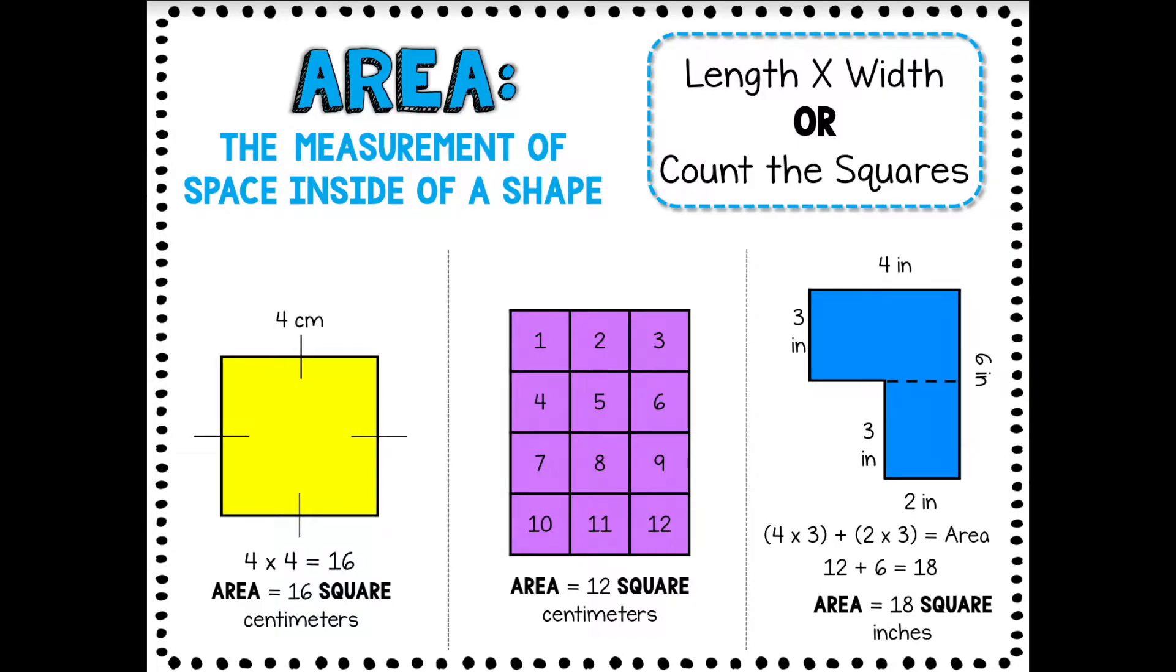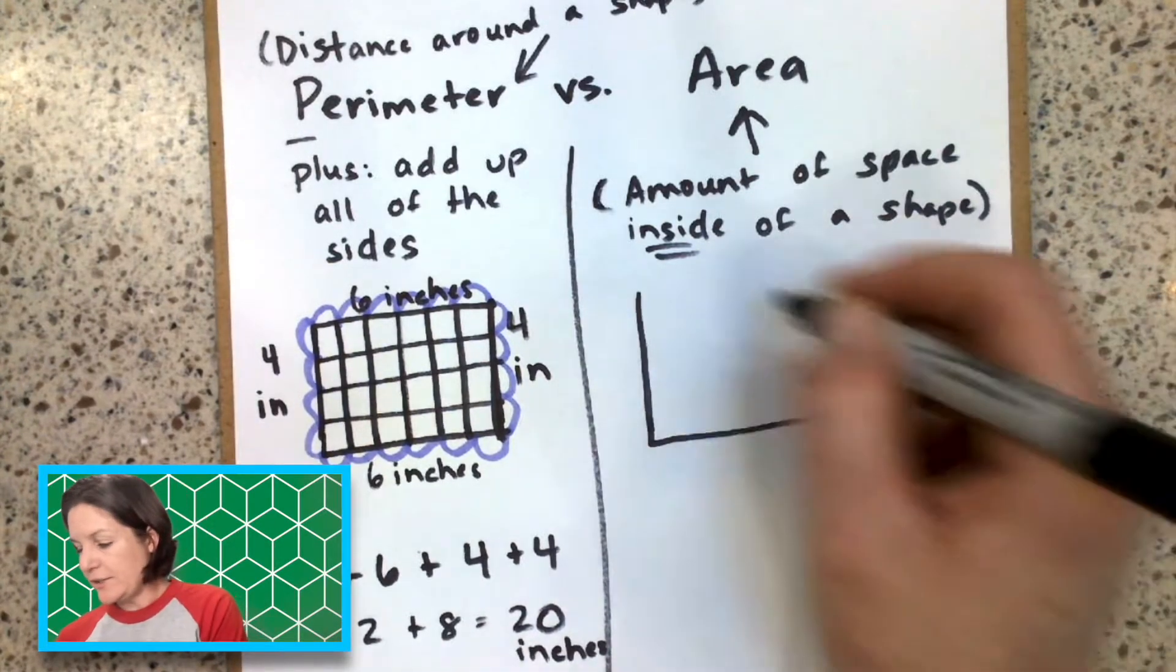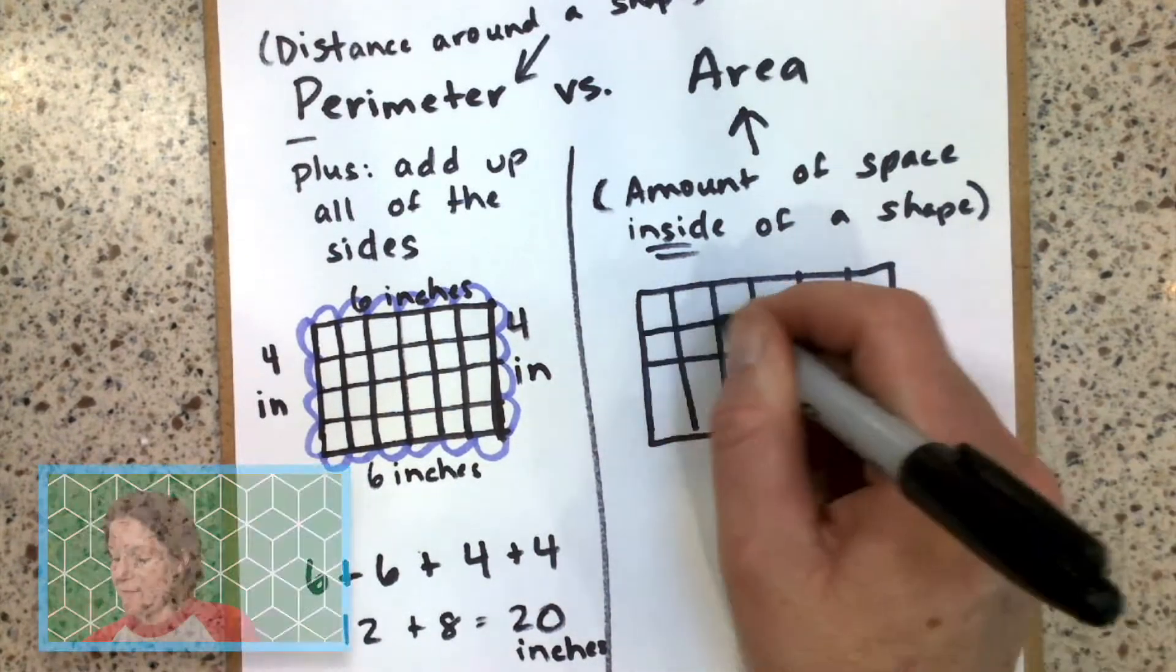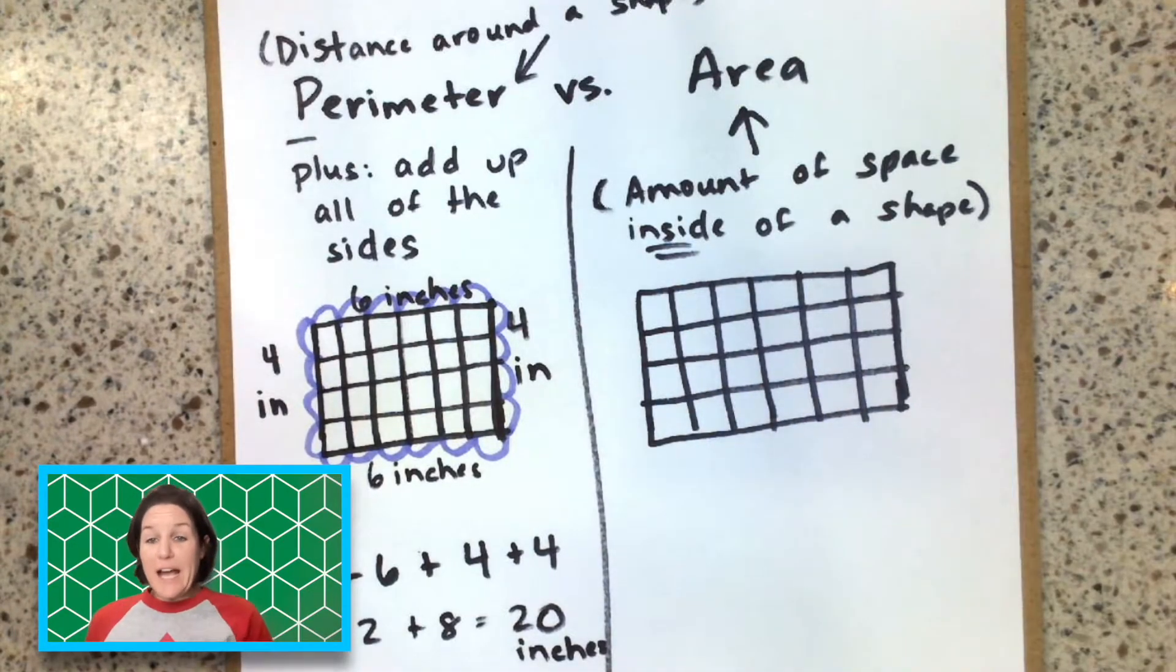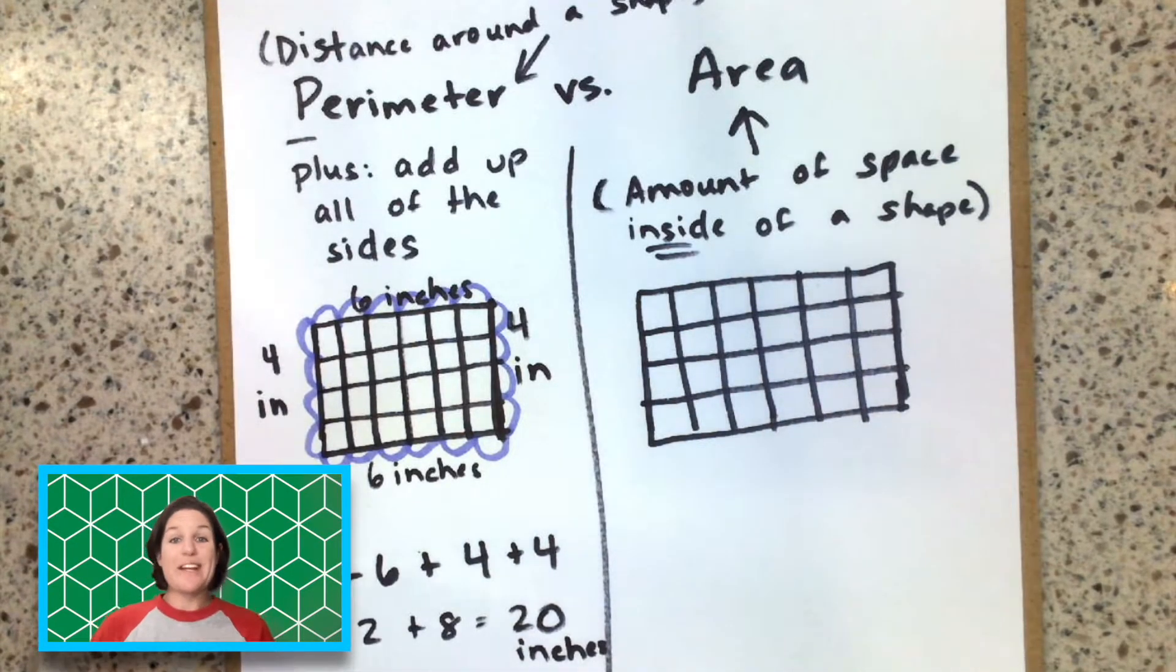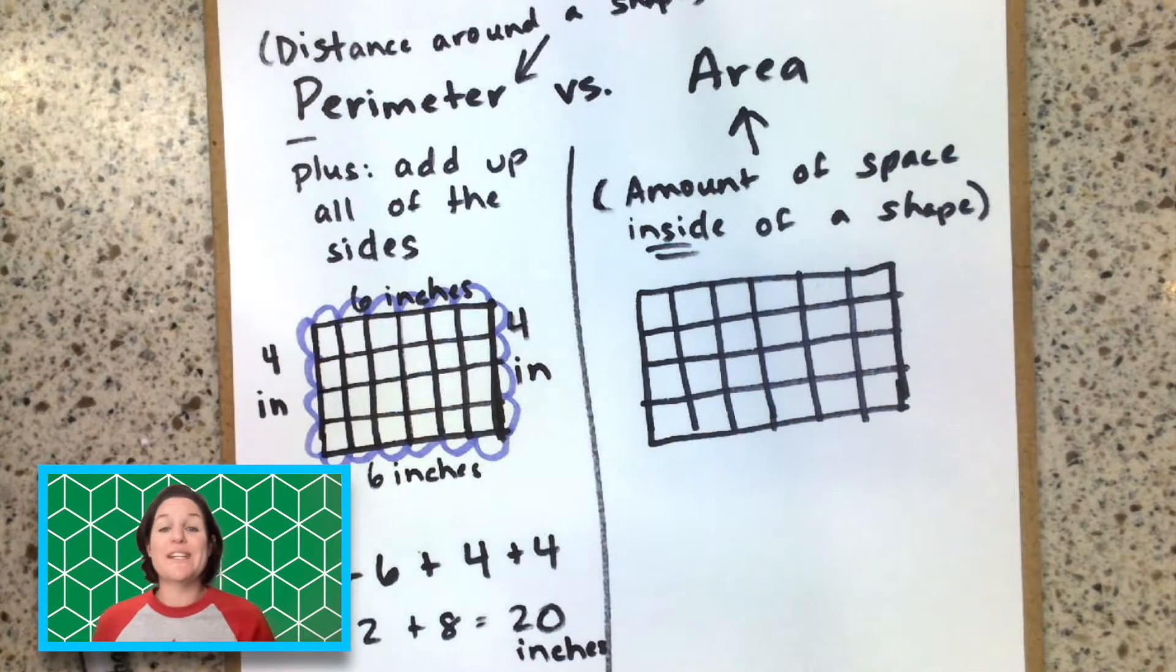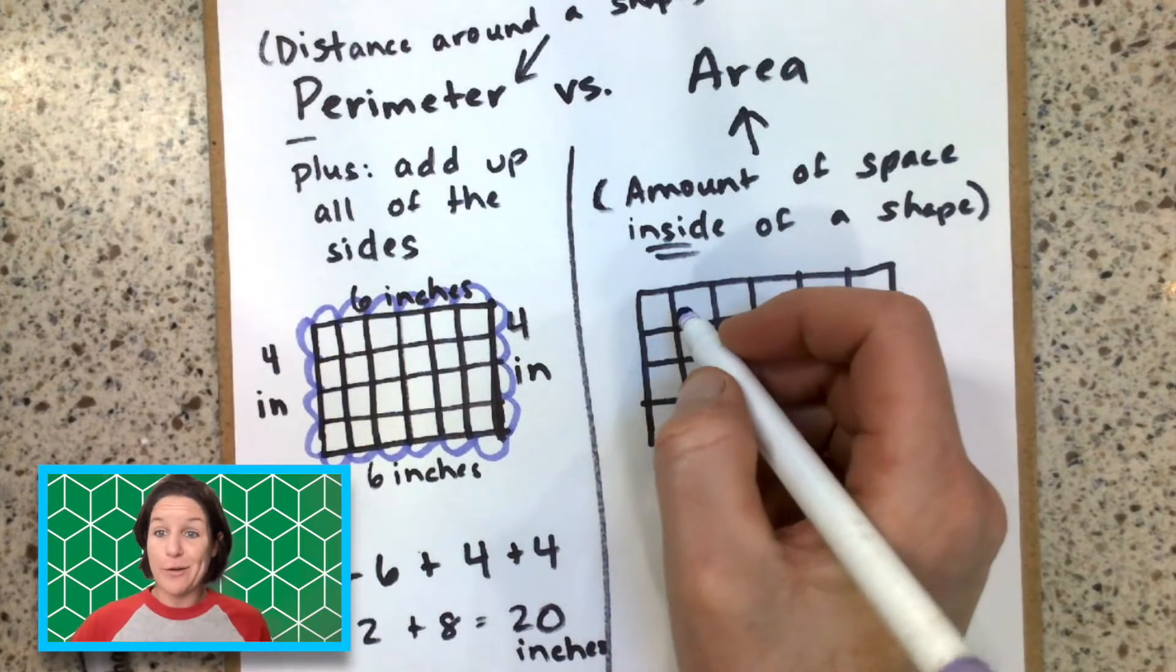So like think of like an area rug, it would be the amount of space that that rug takes up. So if we're taking that same rectangle, right, and let's go ahead and put that grid on it too. Let's say that it was drawn just like this with square units. This is usually how we introduce area to students. Okay, so now what we would be doing because it's the amount inside of the shape. Well, here's the shape and we're counting up the square units inside of the shape. So to do that, you can actually just count up the squares.